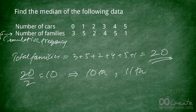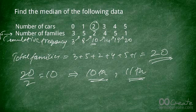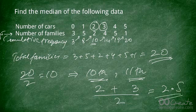Building cumulative frequencies: 3, then 3 + 5 = 8, then 8 + 2 = 10, then 10 + 4 = 14, then 14 + 5 = 19, then 19 + 1 = 20. We're looking for the 10th and 11th values. The cumulative frequency reaches 10 at the group corresponding to 2 cars — so the 10th value is 2. The 11th value falls in the next group, which is 3. So (2 + 3) / 2 = 2.5. That's your median.